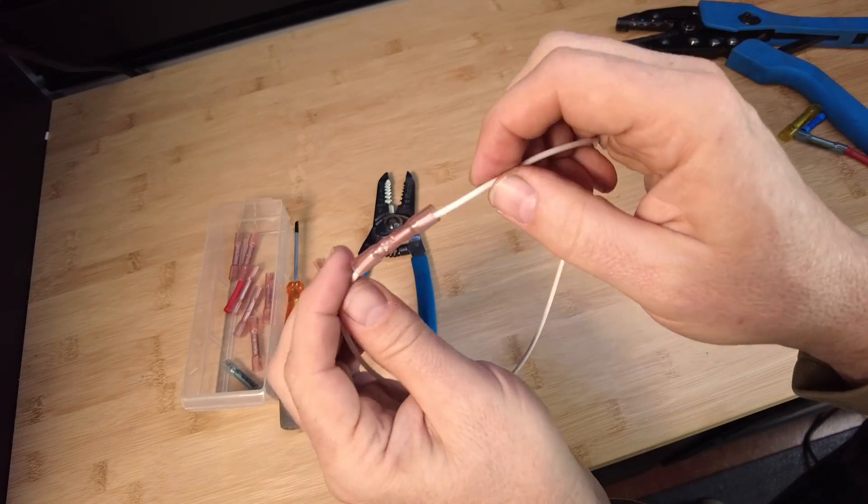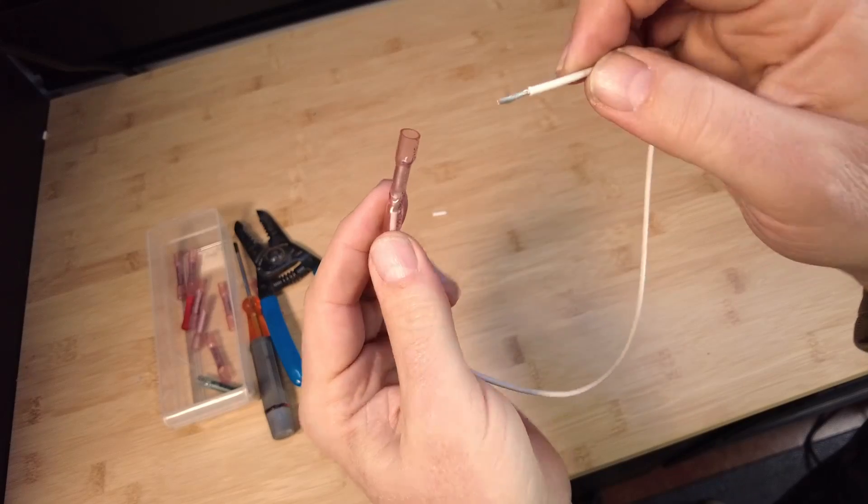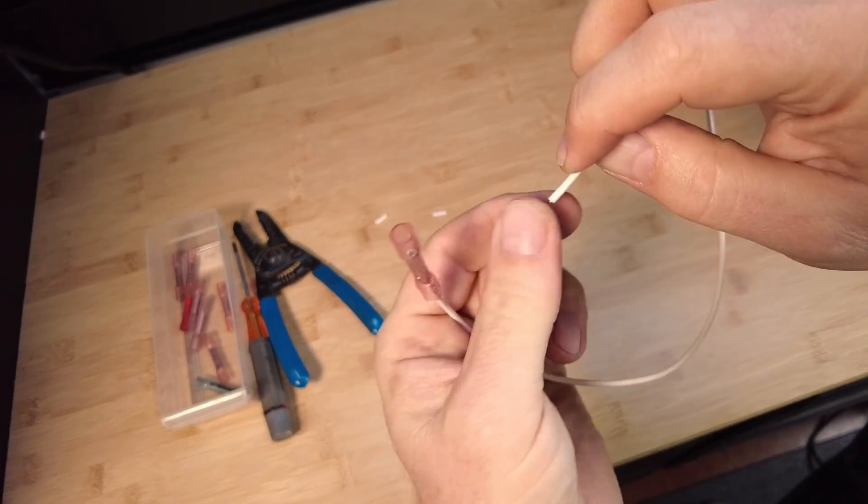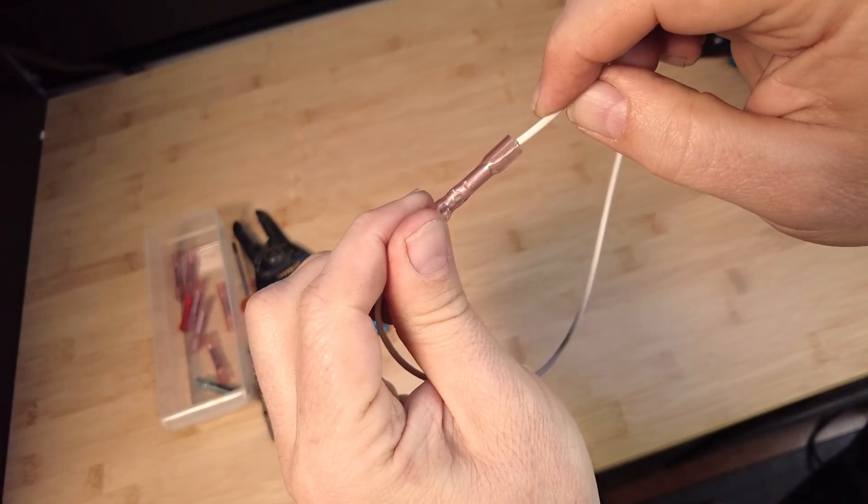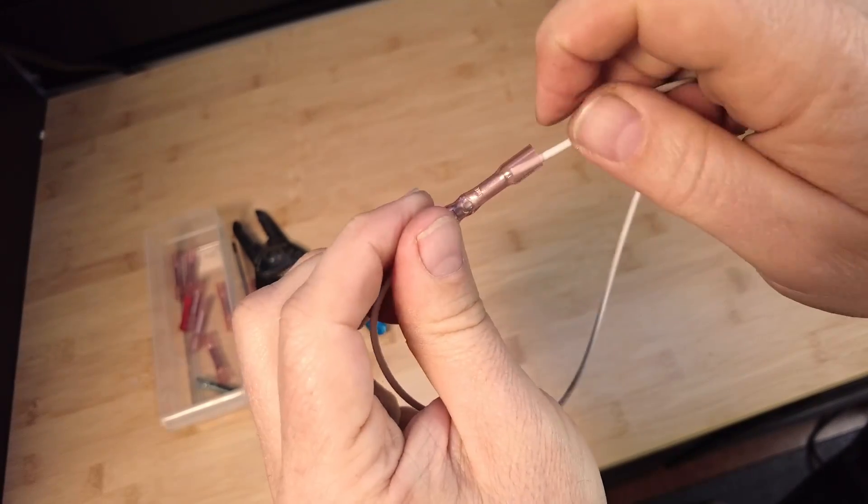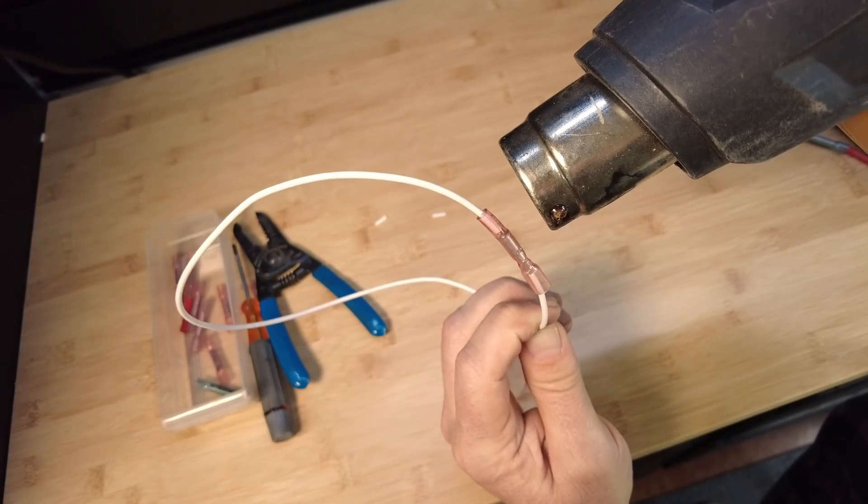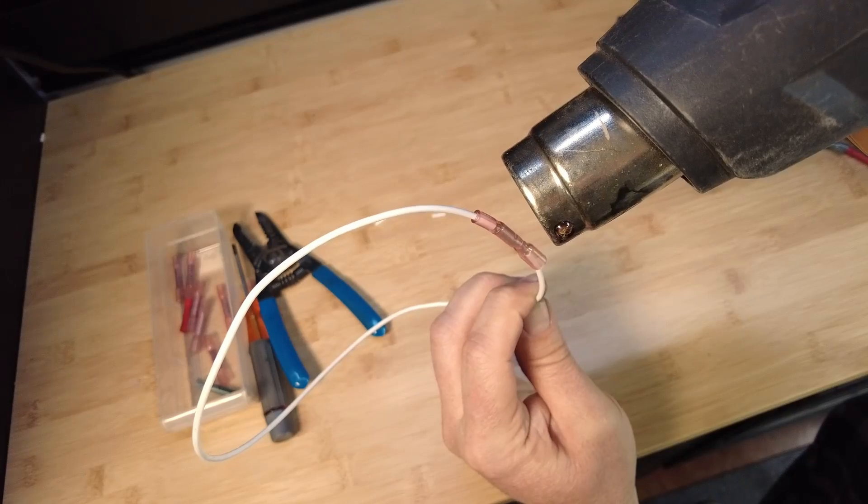So what I've done here is I've just placed this other wire in. I haven't crimped it. I've just inserted it into the connector and I'm not going to crimp it because I want to demonstrate to you the adhesive.